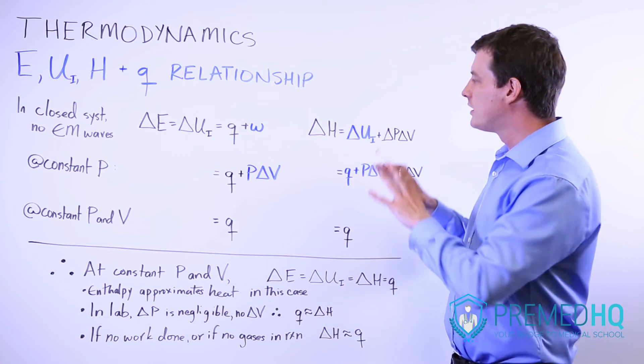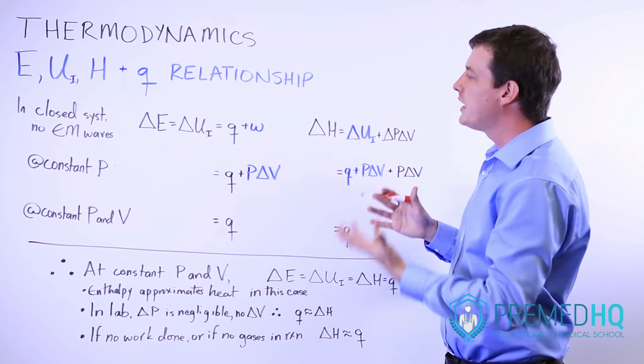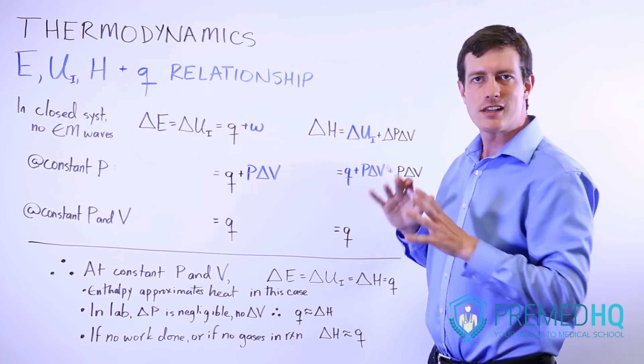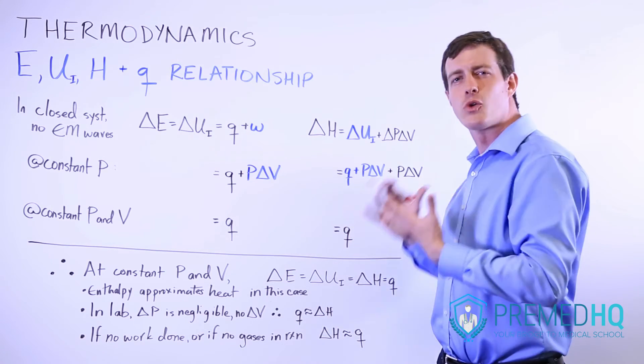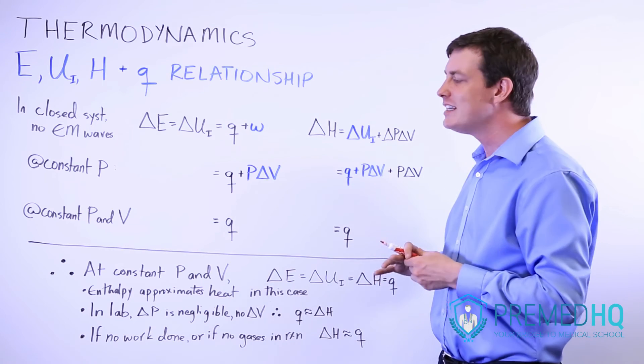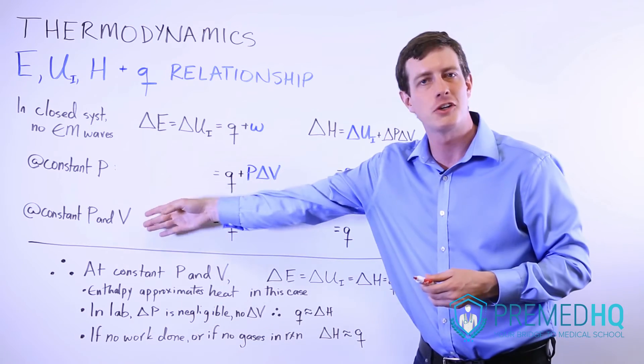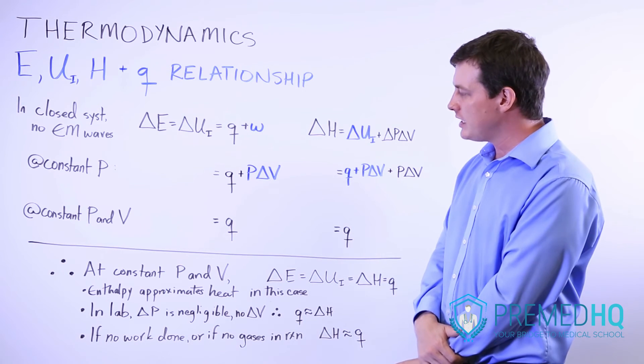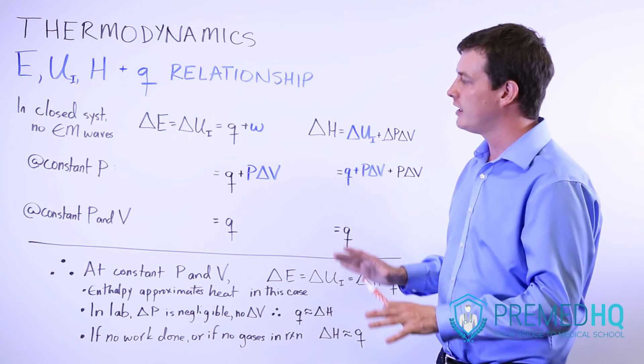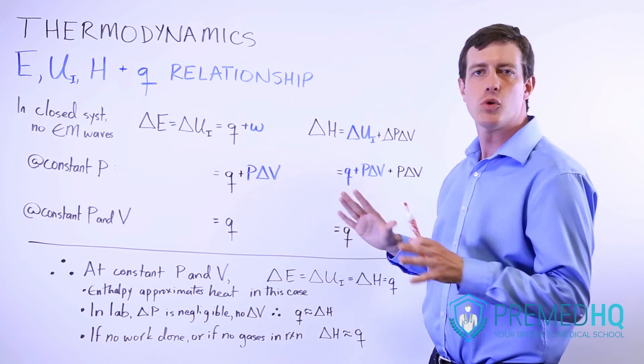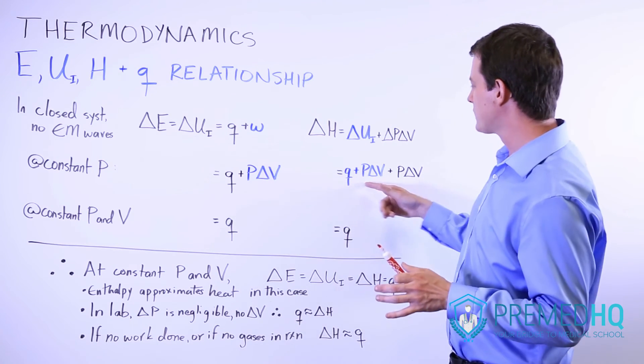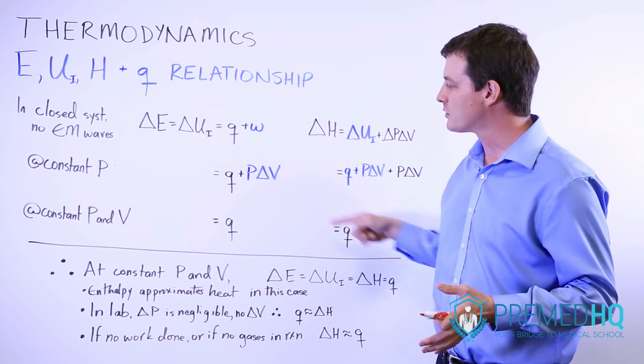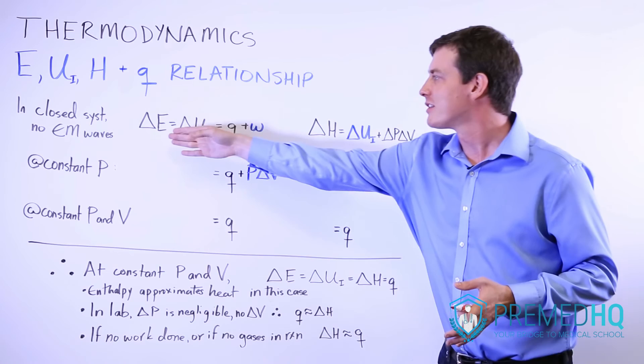This is a fairly complex example. But a lot of times students do ask, is enthalpy energy? Is enthalpy heat? And the answer is sort of, but not all the time. You need these conditions: constant pressure and constant volume, no electromagnetic waves, and some way of ensuring that PV work isn't being performed. That allows us to eliminate all of these PV terms to where we can now express heat as all of these other things.